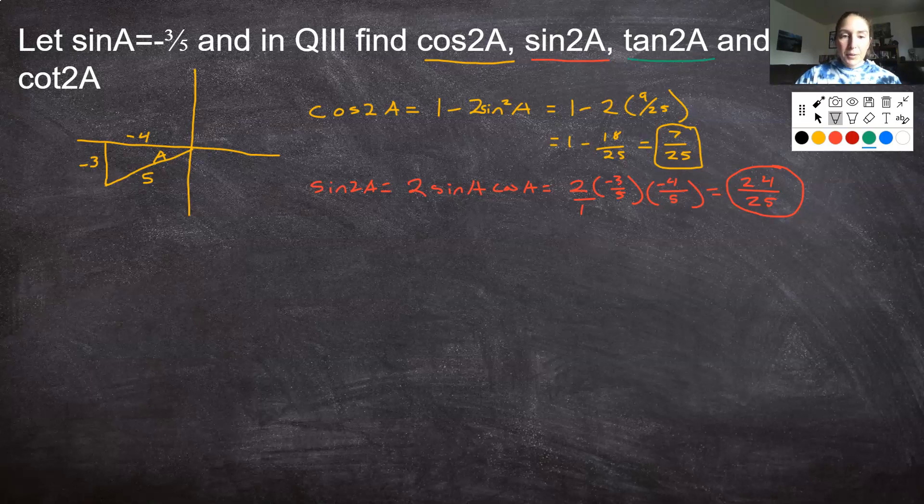Next, let's do tan of 2A. I could launch into this very complex formula. Or I can remember, hey, tan of 2A is equal to sine of 2A over cosine of 2A. Tangent of X is equal to sine of X over cosine of X. Well, I know what sine of 2A is. I just figured it out here, 24 over 25. I also know what cosine of 2A is because I've done it already, 7 over 25. Dividing by a fraction is the same as multiplying by its reciprocal. So let's reciprocal this. 25 is goodbye. And I get 24 over 7. Figured out the tangent.